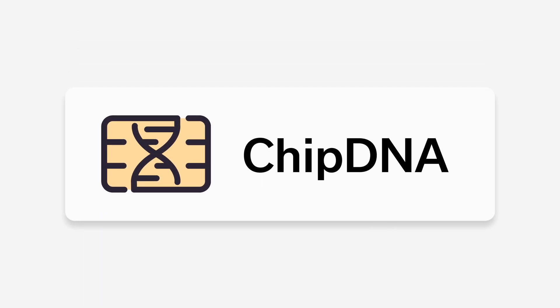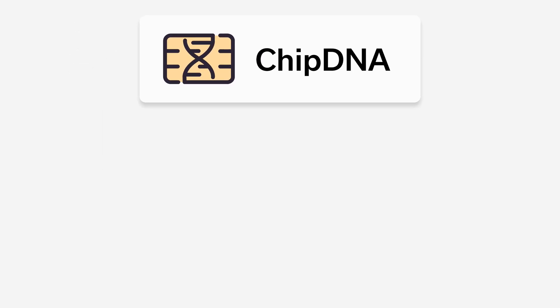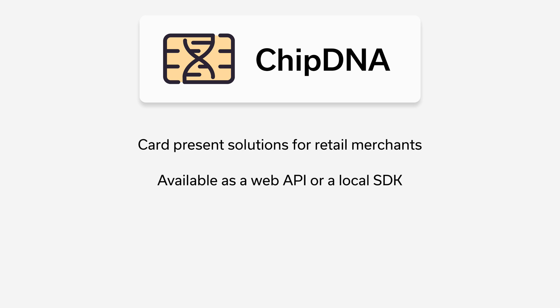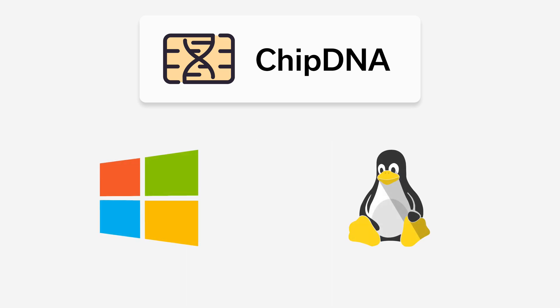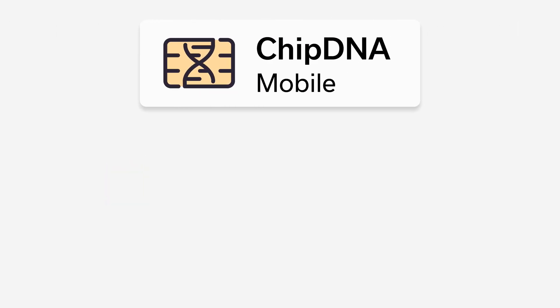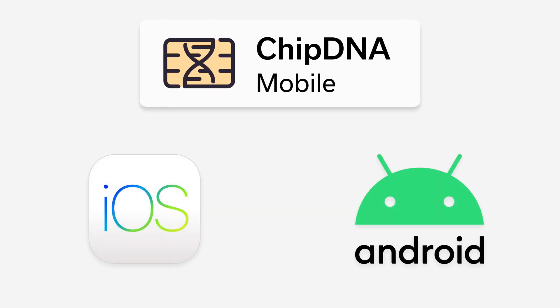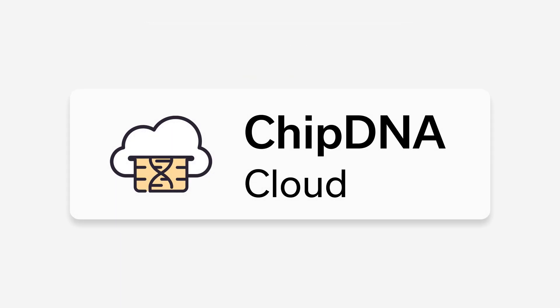Then we have ChipDNA, a product available to take card-present transactions. It's sort of an API, sort of an SDK, depending on how you're using it, and we offer several variants. ChipDNA for Windows and Linux apps lets merchants import the ChipDNA SDK into their project and use one of our certified card readers to process transactions — EMV, MagStripe, Keyed, all of those. If they're building an app on iOS or Android, they can download ChipDNA Mobile and do the same thing for those platforms.